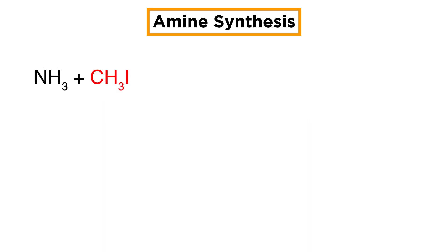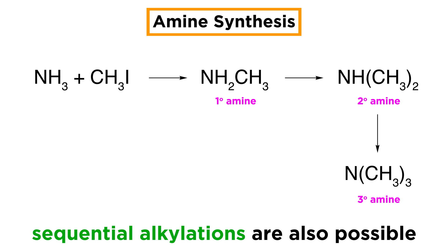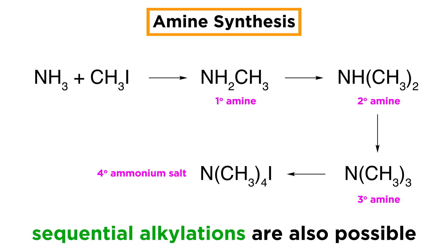Even if the alkyl halide has no beta-hydrogens, the reaction still works poorly, because the primary amine that is produced is also rather nucleophilic and will engage in sequential alkylations, yielding complex mixtures of primary, secondary, and tertiary amines, and even some quaternary ammonium salts.